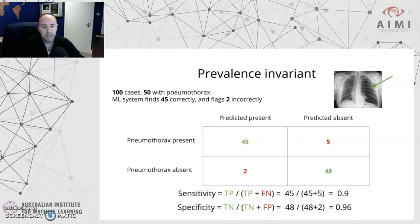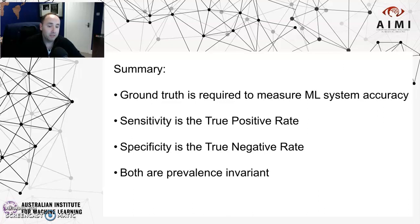In summary: a ground truth is required to measure machine learning system accuracy — the better the ground truth, the more confident you are in your measure of accuracy. Sensitivity is the true positive rate. Specificity is the true negative rate. Both of these metrics are invariant to the prevalence of disease in your test set. And that concludes the lecture.